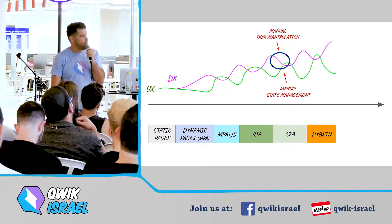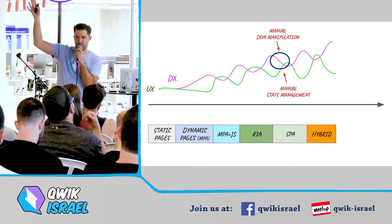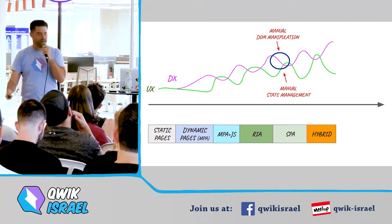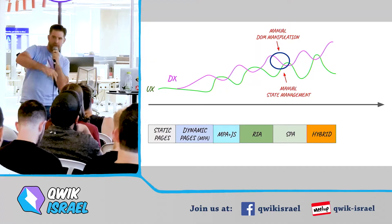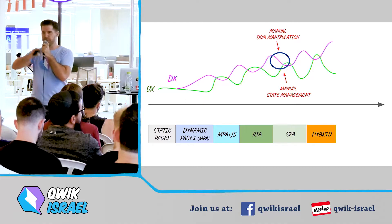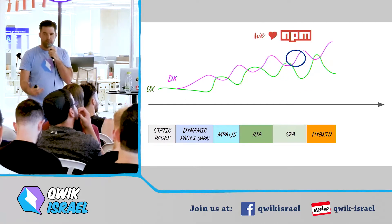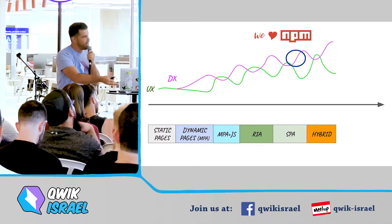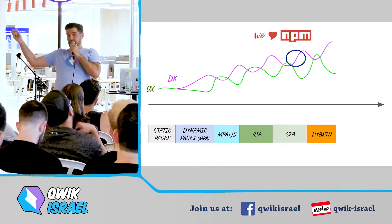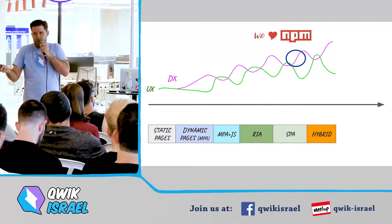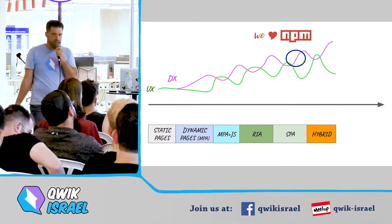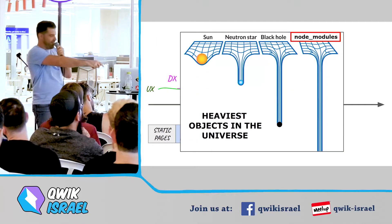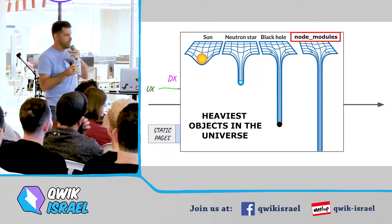Later we also had things like manual state management — who ever wrote their own state management solution? You'd try to sync up values, and then we had evolution there with solutions like Redux, then a shift toward reactivity. Then we added npm node modules — we could use the same code on the client with evolution there and had automatic out-of-the-box solutions so we didn't need to write our own component library or state management.